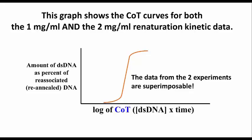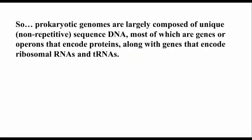COT data allows you to superimpose renaturation kinetic data from two or more different samples or sources of DNA. Prokaryotic genomes are largely composed of unique or non-repetitive sequence DNA, most of which are genes that encode proteins, along with genes that encode ribosomal RNAs and transfer RNAs.